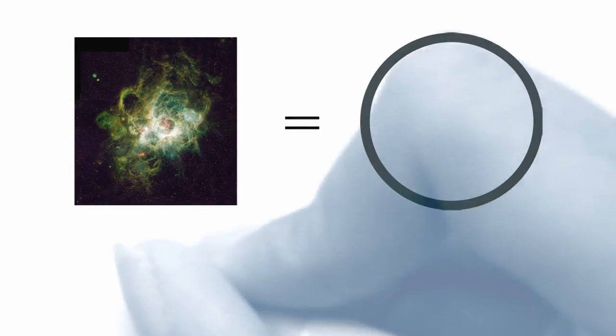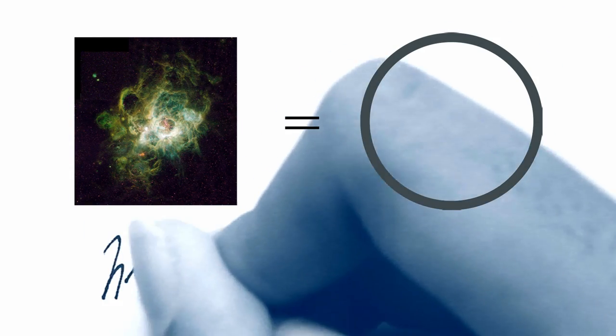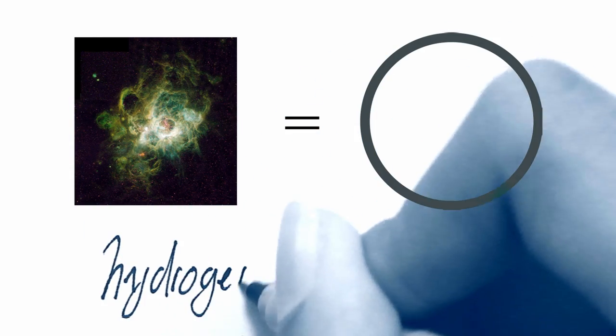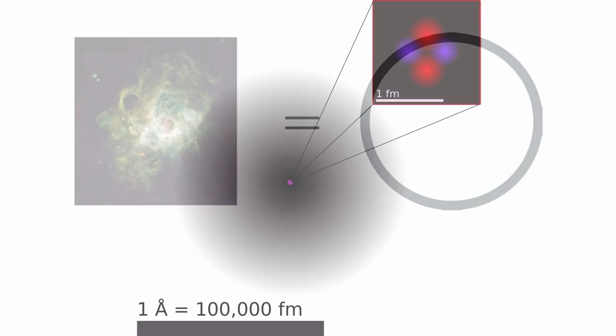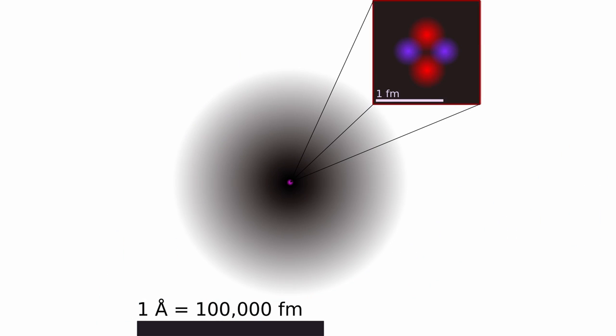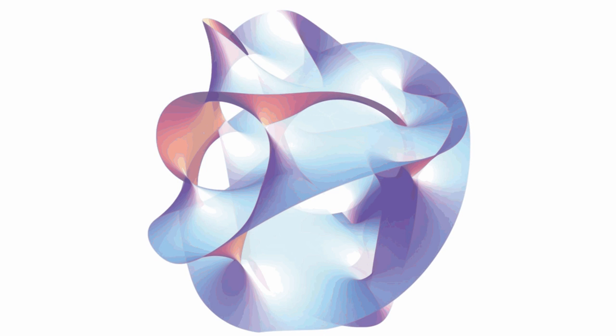Lord Kelvin believed the universe was made of knots, with a circle being the simplest — what we call the unknot. Today we instead have atoms, but we sort of continue this theory with string theory. Mathematicians are thinking about the relationships between strings and quantum properties.